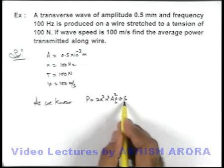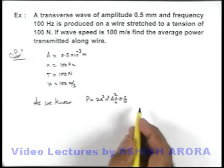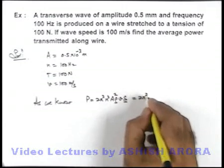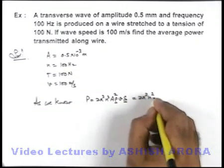The product of density and cross-sectional area can be written as linear mass density of the string. So power can be written as 2π²n²A²μv.